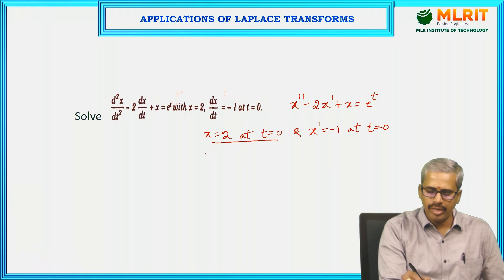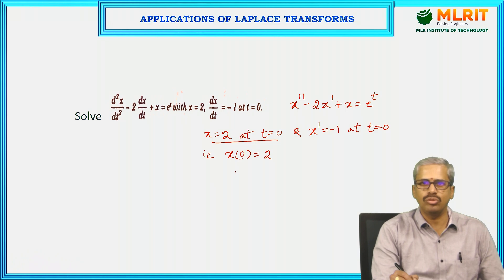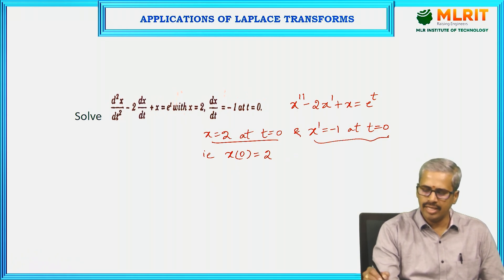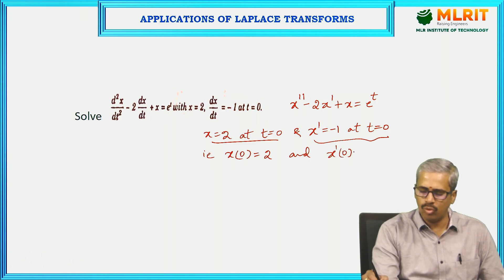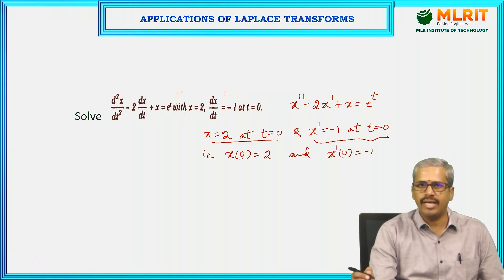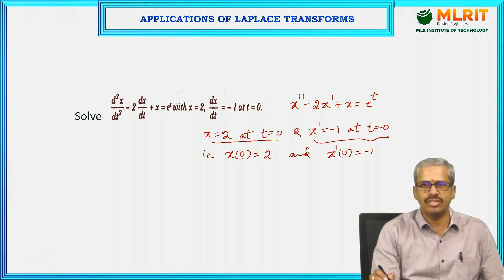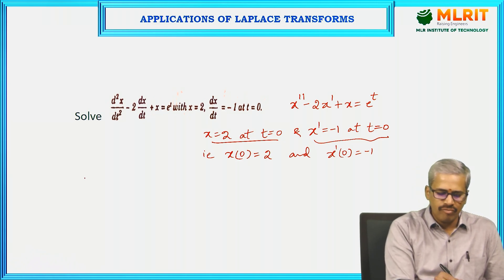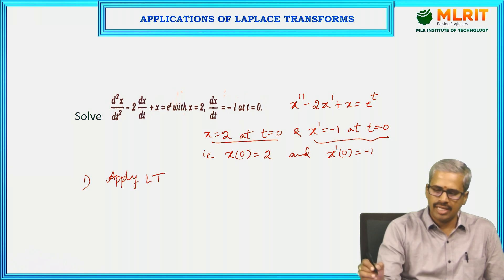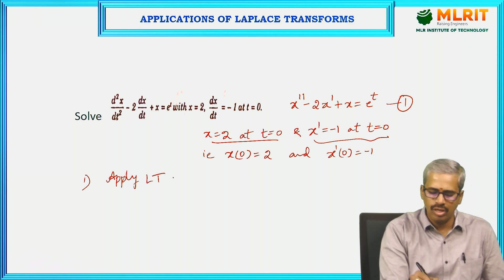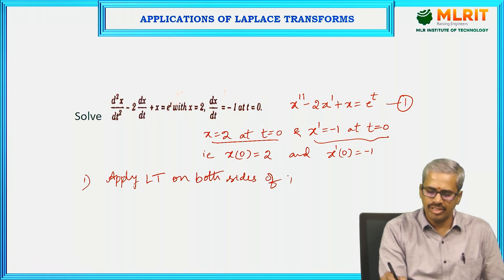These can also be written as x(0) equals 2 and x'(0) equals minus 1. Using these two initial conditions we have to solve this differential equation. The first step is to apply Laplace transform to both sides of equation 1.